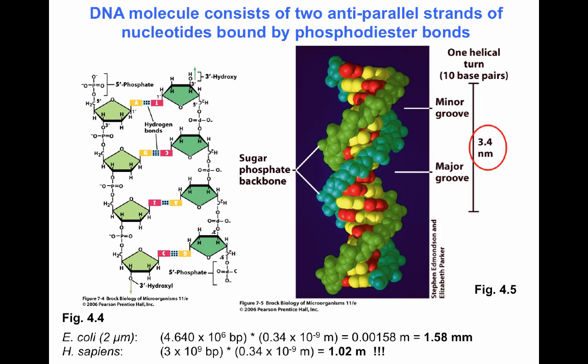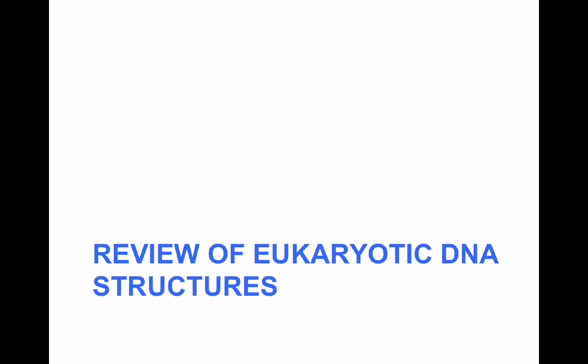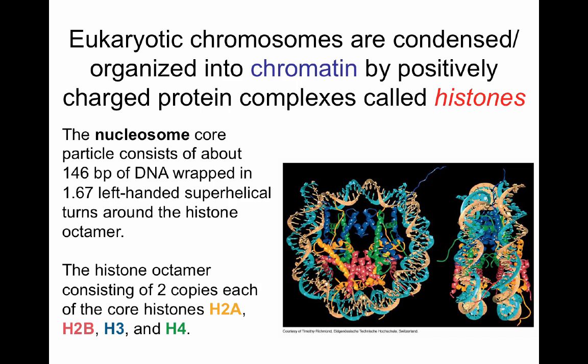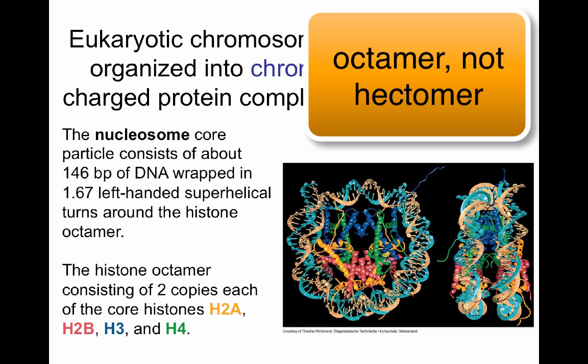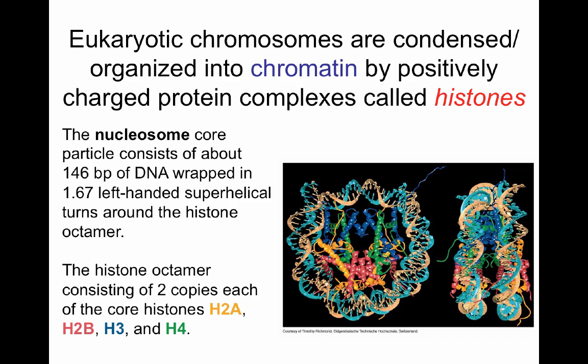Let's review how DNA compaction happens in eukarya. In eukaryotic chromosomes, the DNA is organized around nucleosomes — a histone octamer of two molecules each of H2A, H2B, H3, and H4. The histones are positively charged, and since the DNA backbone has phosphates and is negatively charged, you have 1.67 left-handed supercoil turns around a histone octamer. The nucleosome as a whole has about 146 base pairs of DNA wrapped around the histone core.